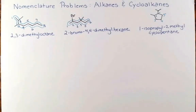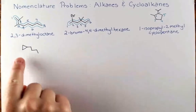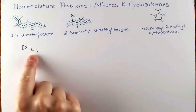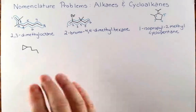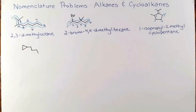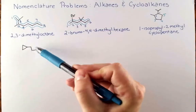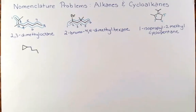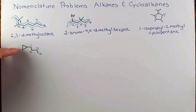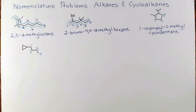Let's do a couple more cyclic examples. This is kind of a funny example — we have a cyclopropane and we have a butyl chain. Do we name this as a butane or as a cyclopropane? The rule is whichever one is longer takes priority. Butane has 4 carbons and cyclopropane has just 3, so we name this after the butane chain. Numbering so the substituent is at the lowest position, this is cyclopropylbutane.